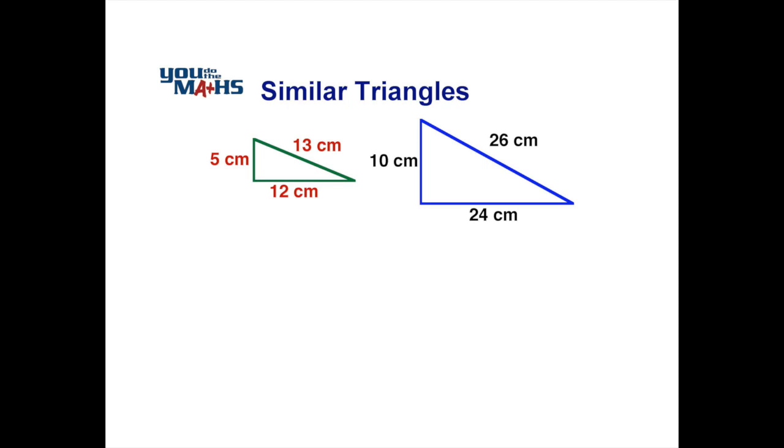Similar shapes look identical in appearance but have different sizes. With these two triangles, if we align them the same way, we can see they're the same shape.